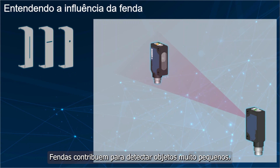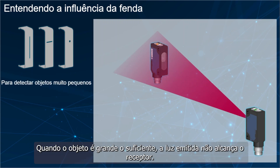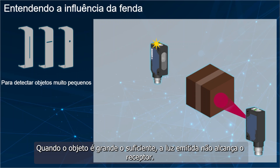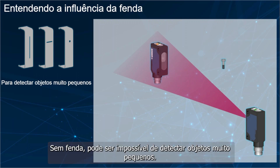The slits contribute to detect very small objects. When the object is big enough, the emitted light does not reach the receiver. A small object lets too much energy reach the receiver. Without slits, it can be impossible to detect very small objects.